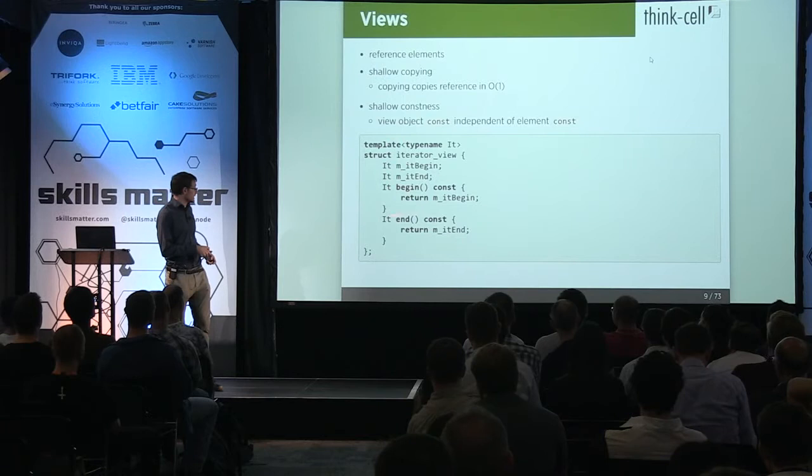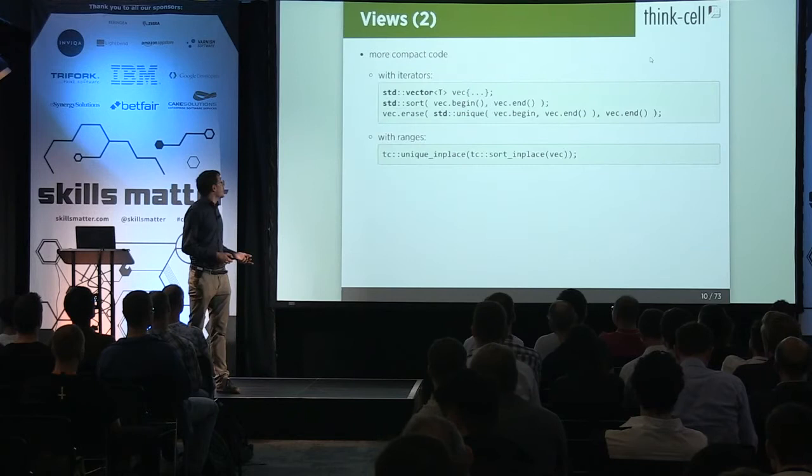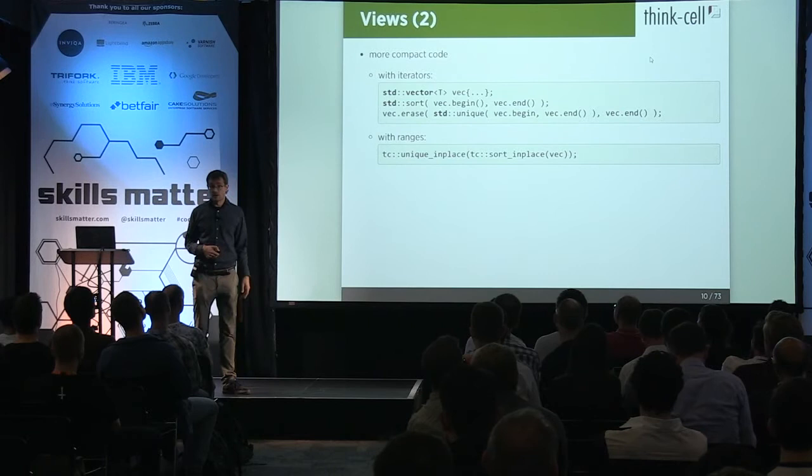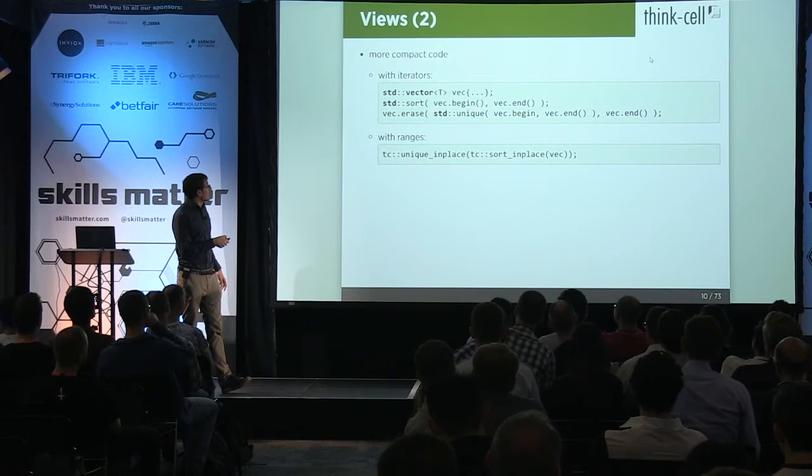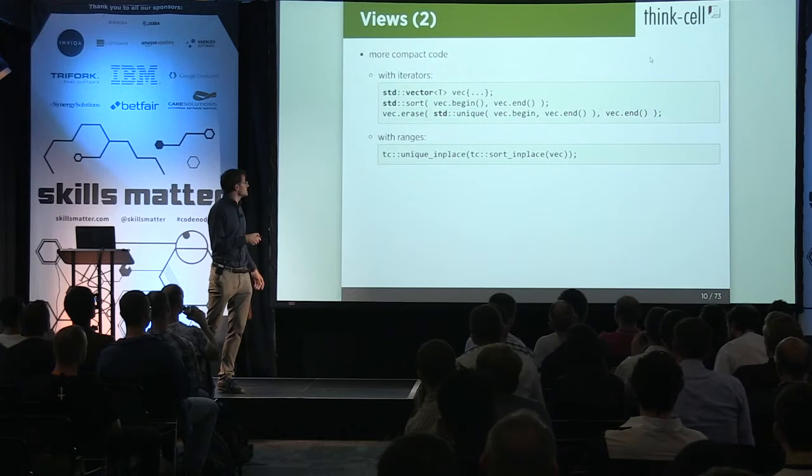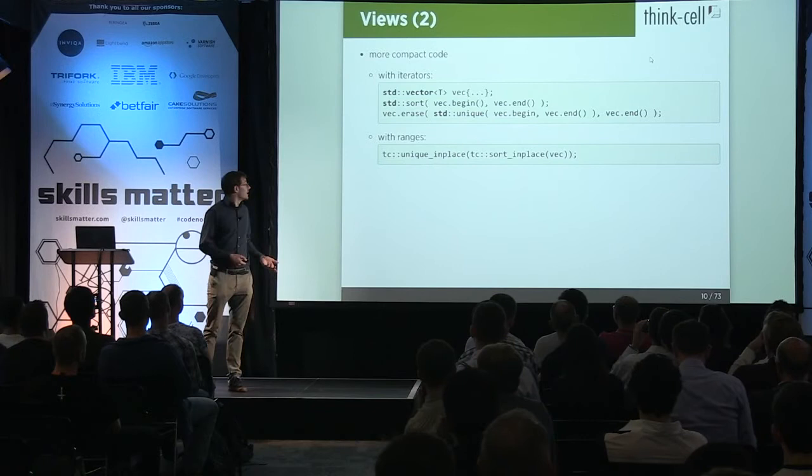Why would you want to use it? With iterators, code can get quite verbose. For example, when you have to sort a vector and then erase the duplicate elements, you say std::sort vec.begin() vec.end(), then std::unique vec.begin() vec.end(), then erase — and there's a lot of repetition that you'd really like to avoid. With ranges, at least with our library, you can write simply sort on the vector, then unique in place, and you solve your problem.